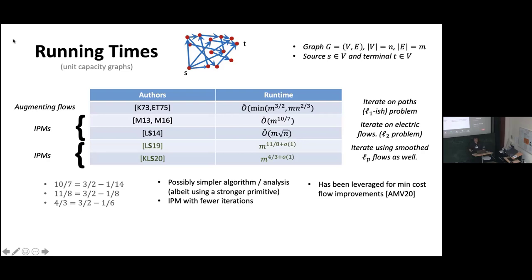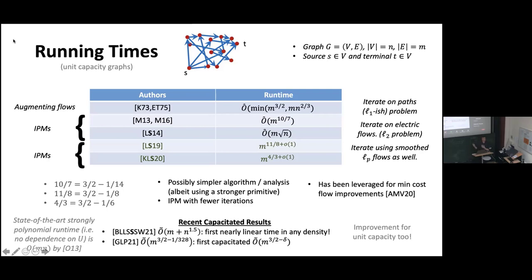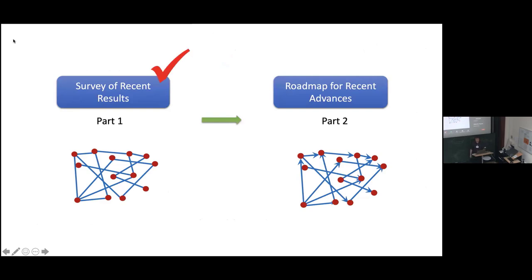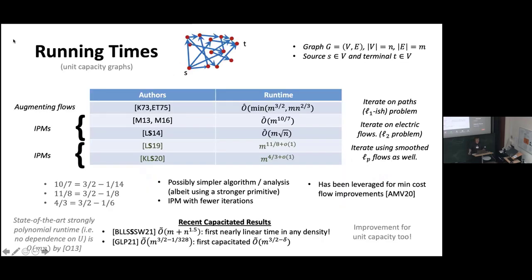There are a number of other exciting results on maximum flow. There was recent work showing that on both unit capacity and capacitated graphs, max flow can be solved in near-linear time on dense graphs. There was also work showing faster algorithms on capacitated graphs, and a whole line of work on strongly polynomial max flow. So that's the survey. What I'll do in the next section is give a taste of how these recent improvements work, focusing on the 11/8 algorithm and a taste of where the 4/3 comes from.